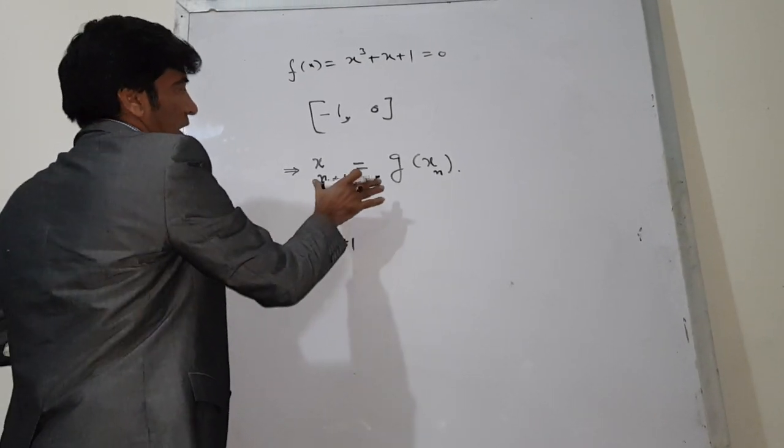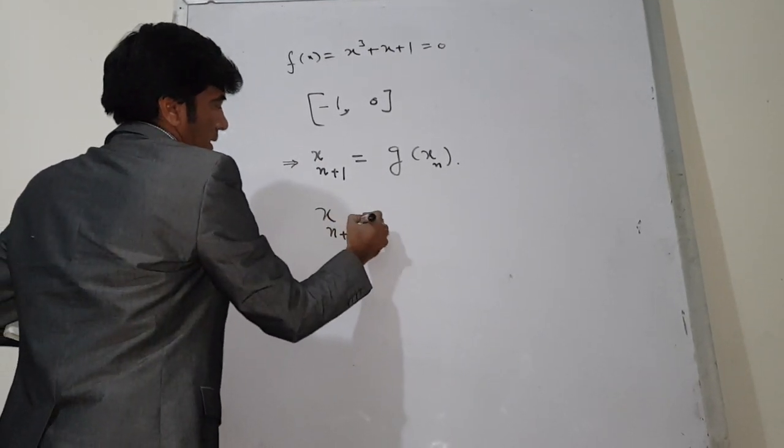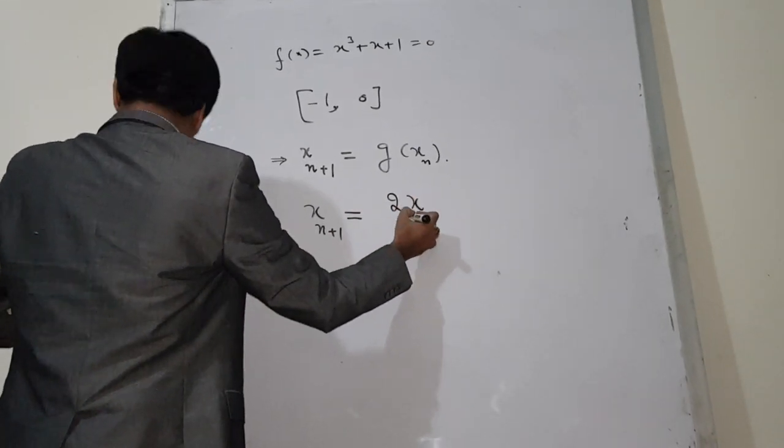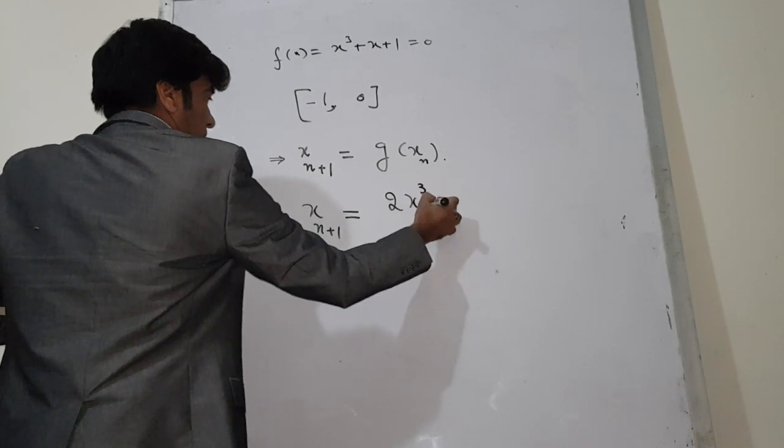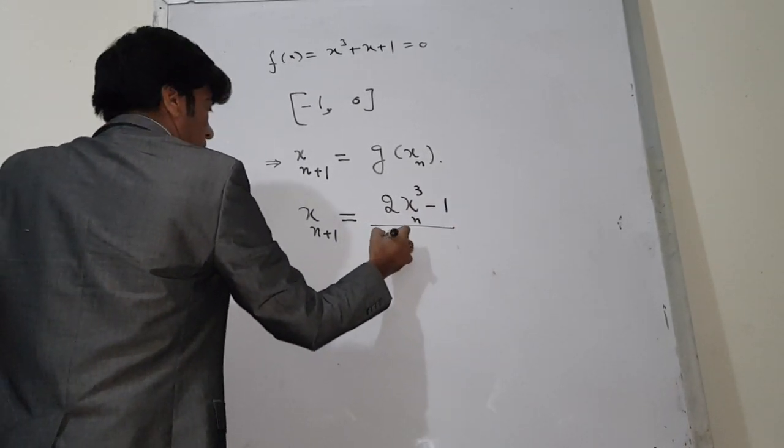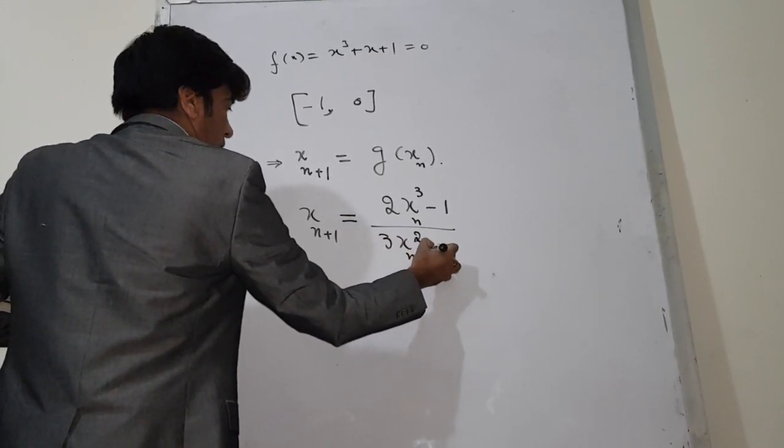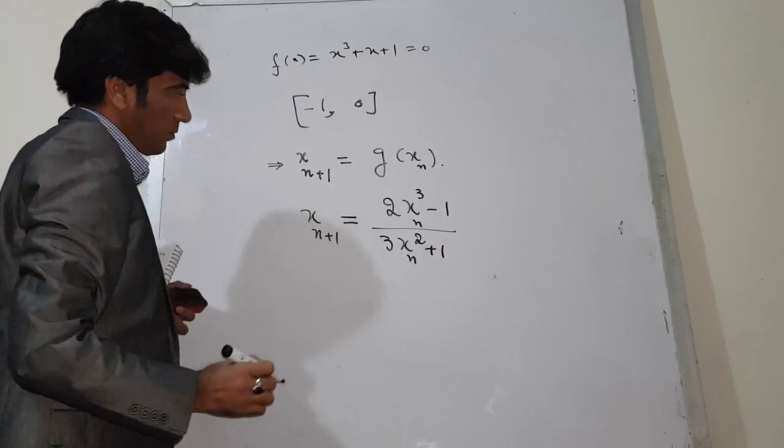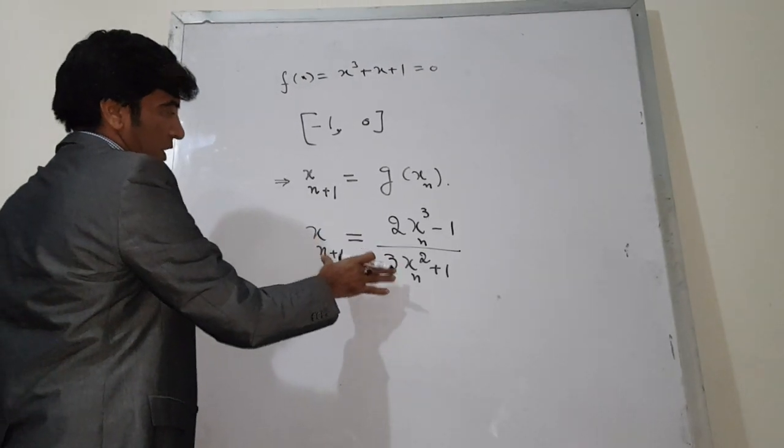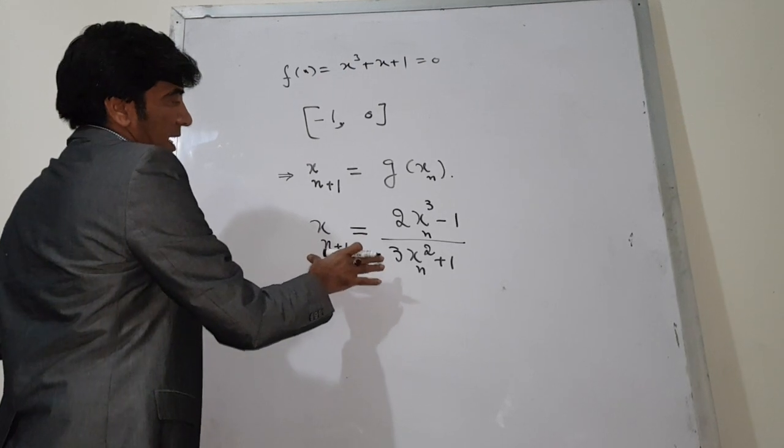Let's say, and this is generally already given in the question in all A-levels questions, you don't need to derive it by yourself. It's already given: x_{n+1} = (2x_n³ - 1)/(3x_n² + 1). So he himself derived this equation, and now he is asking, does this equation converge to this?